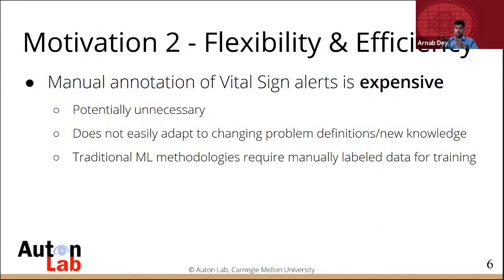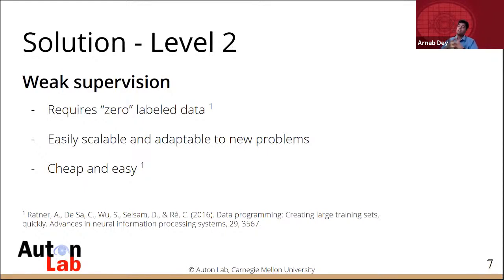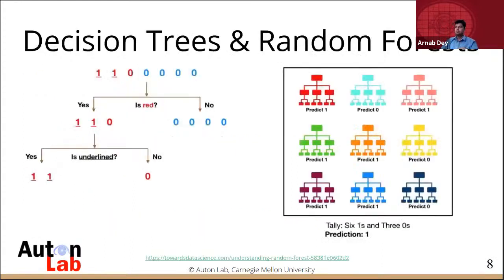Prior research has used supervised learning to classify these alerts. But you need that initial investment of time, money, and effort to acquire ground truth labeled training data. It doesn't easily adapt to changing problem definitions. The solution is weak supervision or data programming.